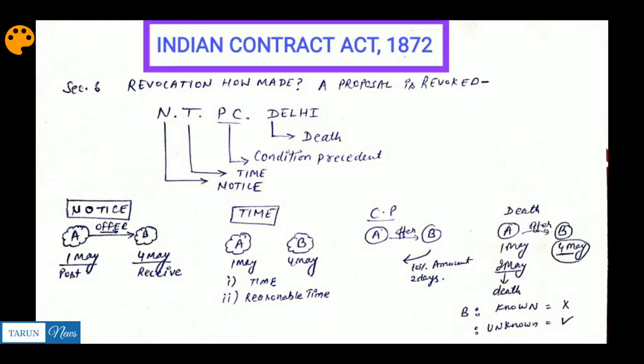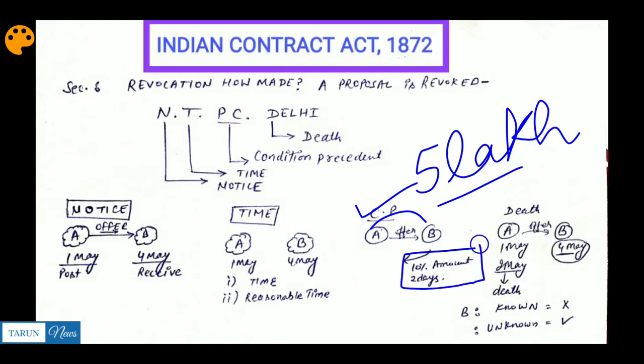Next is Condition Precedent. What is the meaning? When A gave the offer letter to B, he mentioned a condition in it. You have a proposal - if you want to accept this proposal, there is a certain condition. You have to give a certain amount, you have to give 10% of this. You have to send 50,000 rupees, then our communication will be complete.